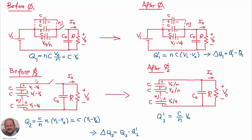During the other interval, before phi2 we have all the capacitors in series charged up to a voltage Vi minus Vo. At a given instant we close the equivalent switch, and after interval phi2 all the capacitors are in series and in parallel with the output, so all of them have a voltage equal to Vo divided by n. We calculate the charge before and after phi2, and the difference delta q2 is given by q2 minus q2 prime.